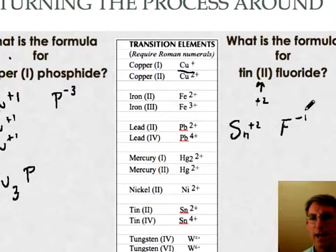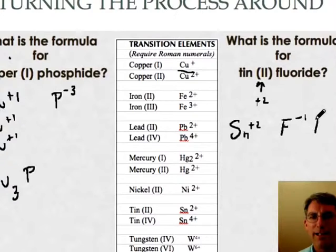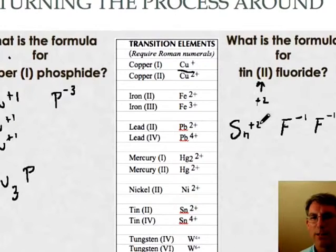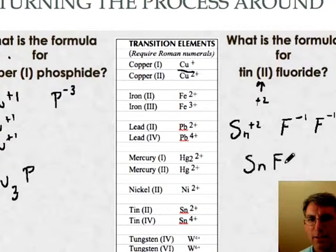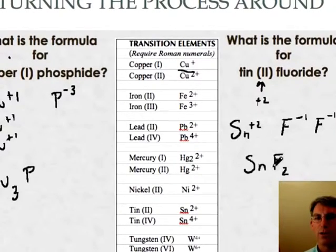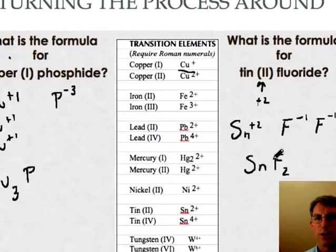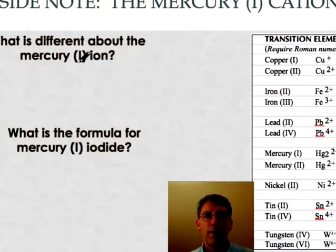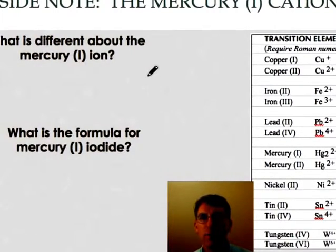So in order to make that happen, I'd need a second fluorine. So now I'll have two negative ones to balance out my positive two. And I can rewrite that as a tin with an F and a two. Two F's, two negative one charges, balancing out a positive two charge. I've got one more note I want to make before I set you off on your own.